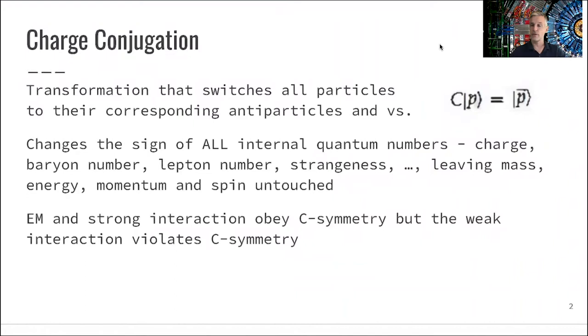Charge conjugation is a transformation which switches all particles to the corresponding antiparticles and vice versa. So you have a particle P, you apply charge conjugation on this particle, and you receive its antiparticle.